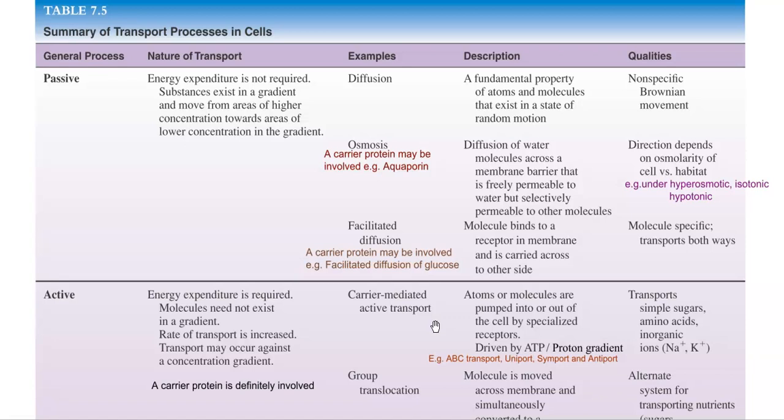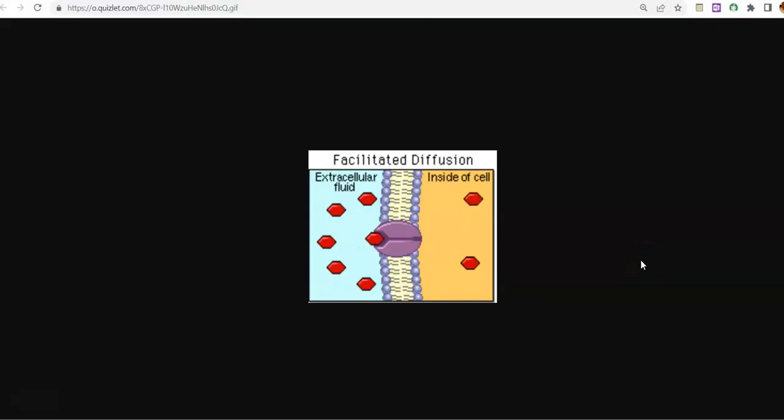The next type is facilitated diffusion. The same diffusion of molecules occurs, but a carrier protein is involved — a protein embedded in the membrane that facilitates transport of the nutrient by diffusion. The molecules bind to a receptor protein in the membrane and are carried across to the other side. This kind of transport is molecule-specific. A classical example is the carrier-protein-mediated transport of glucose. As seen in the GIF image, a glucose transporter embedded in the membrane is involved in transporting glucose in both directions.